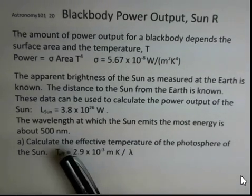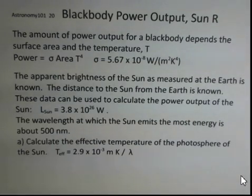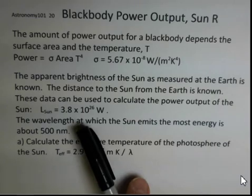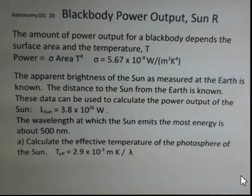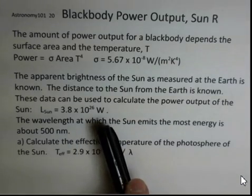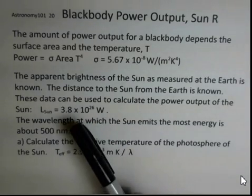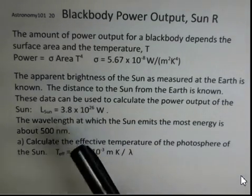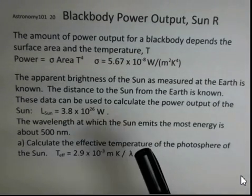Those two pieces of information can be used to calculate how much power the sun is delivering to space, and that turns out to be 3.8 times 10 to the 26 watts. In terms of this 10 to the 26, a trillion is 10 to the 12, so this would be 100 trillion trillion watts.